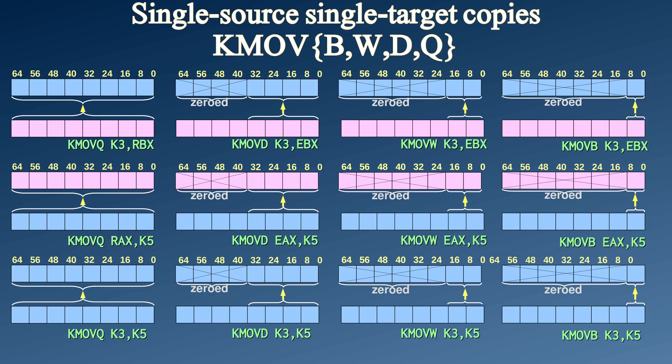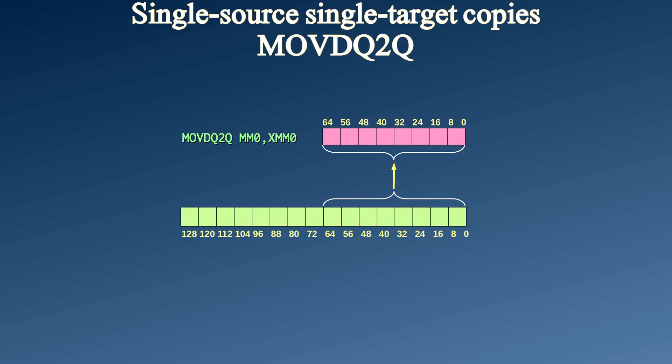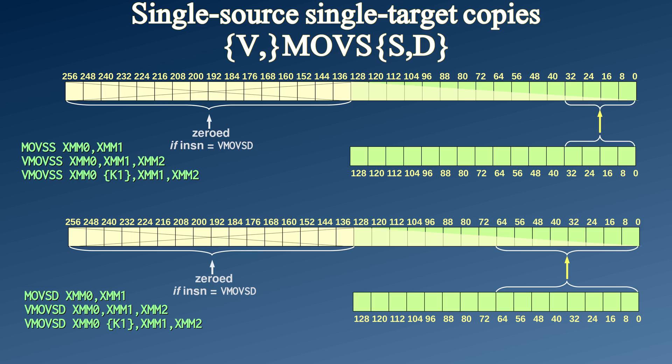I digress. At least the pattern is still the same. MOVDQ2Q — apparently that's what they decided to call an instruction that copies 64 bits of data from an SSE register to an MMX register. MOVSS and MOVSD are used to copy a single floating-point value from a low part of one register to another.